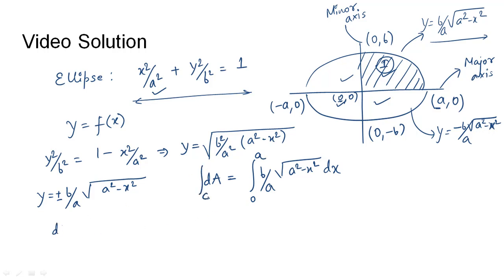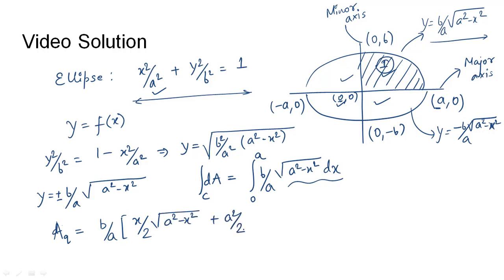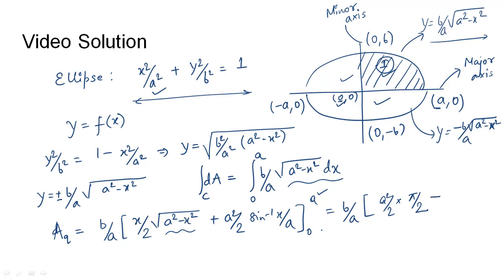Integrating, the area of one quadrant equals b/a times the standard integral of √(a² − x²)dx, which is x/2 · √(a² − x²) + a²/2 · sin⁻¹(x/a), evaluated from 0 to a. Imposing the upper limit a: the first term becomes 0 and the second gives a²/2 · sin⁻¹(1) = a²/2 · π/2. Imposing the lower limit 0: both terms become 0.